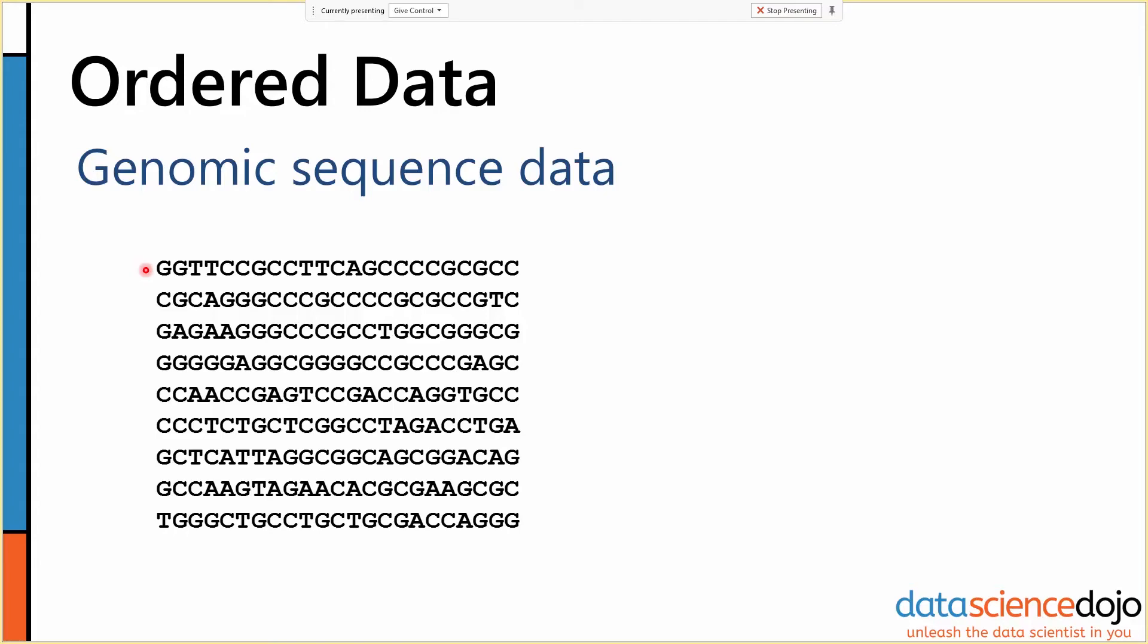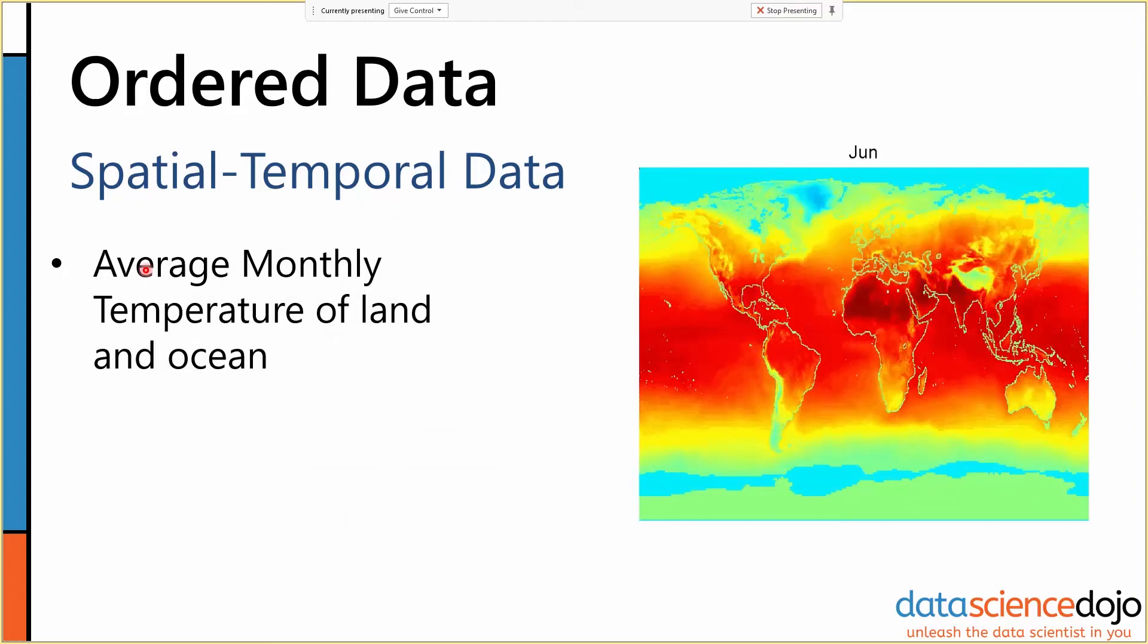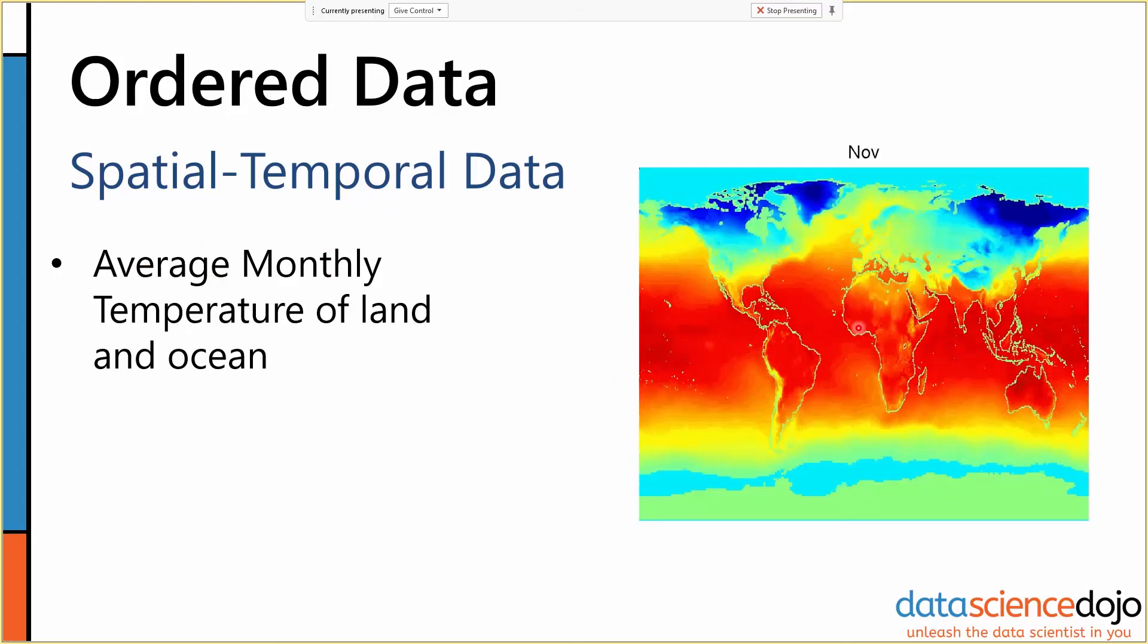Another example, your classic example of ordered data, is spatial and temporal data. This little GIF here represents the average monthly temperature of land and oceans over the course of a year.